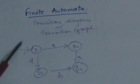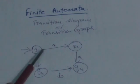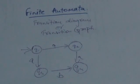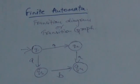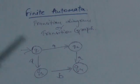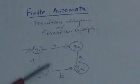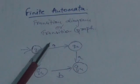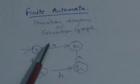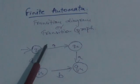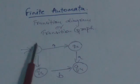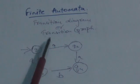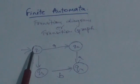Nodes of that graph represent states of the finite automata, and directed edges are labeled with input symbols. These directed edges represent transitions. Here Q1, Q2, Q3, and Q4 are the nodes of the transition graph, representing four states. These arrows represent transitions. Consider this arrow — it is labeled with A, going from Q1 to Q2.